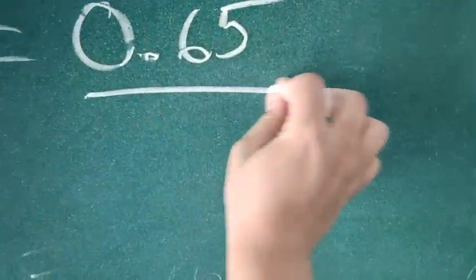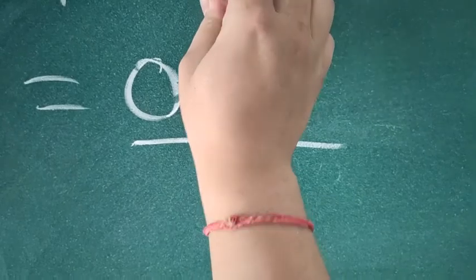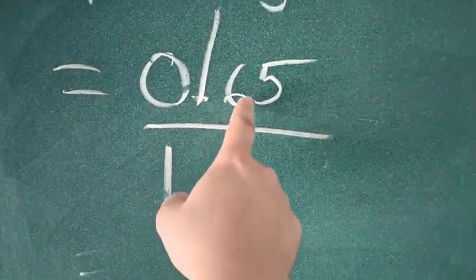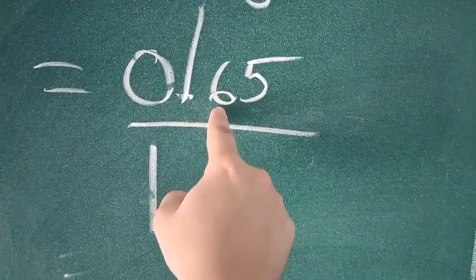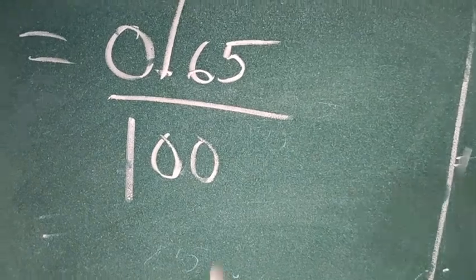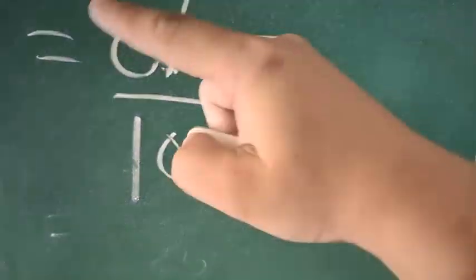First of all, 0.65, you write this number. After that, you put 1 divided, why? To remove this point. Remove the point, write 1. For this point, you will write 1. After point, how many digits are there? 2, right? 1 and 2. So you will write 2 0. Now, this is your fraction.